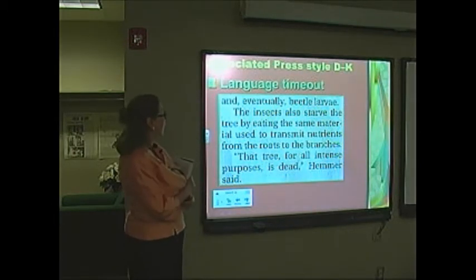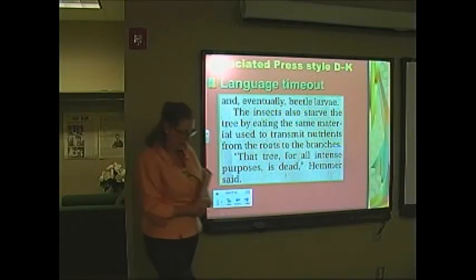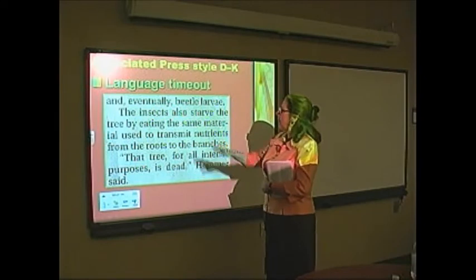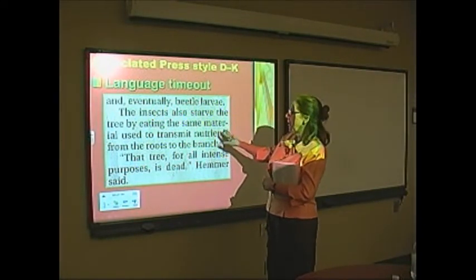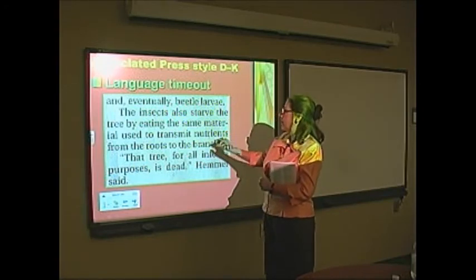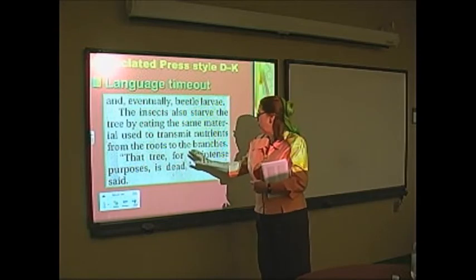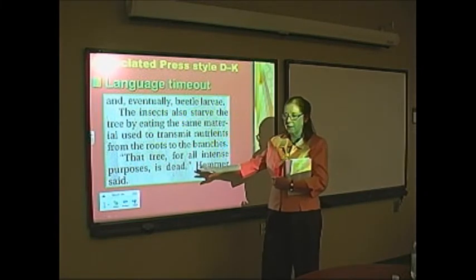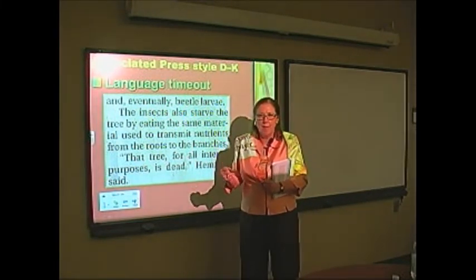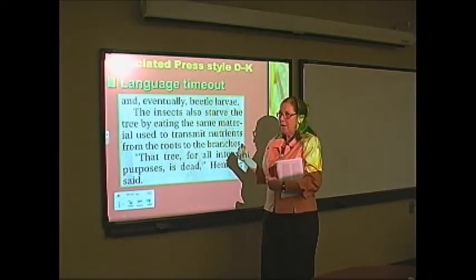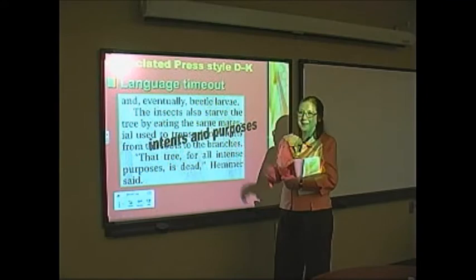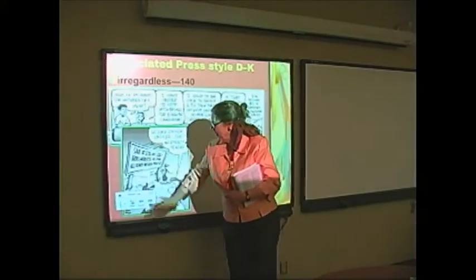Language timeout — this came from our local paper. It said: the insects also starved the tree by eating the same material used to transmit nutrients from the roots to the branches. That tree, for all intense purposes, is dead. Intense purposes? The word intense means tough or hard. What they really meant to say was intents and purposes. And irregardless — there's no such word in the English language; the word is regardless, on page 140. It's a double negative.